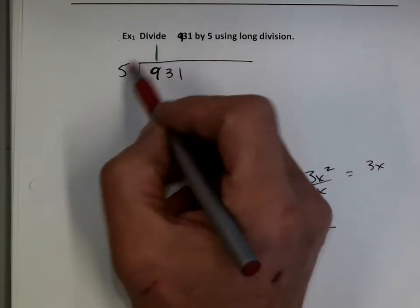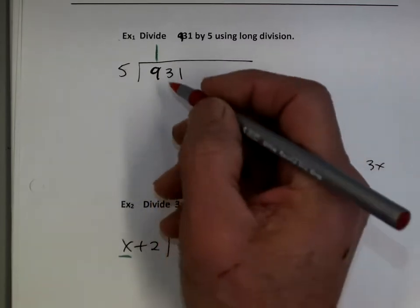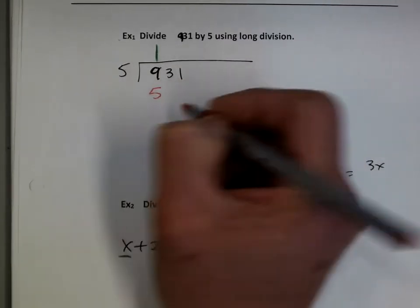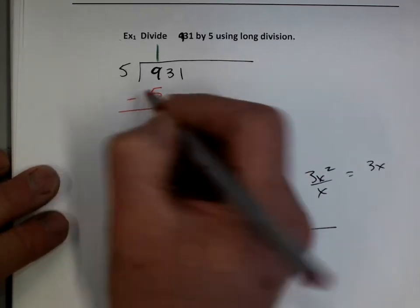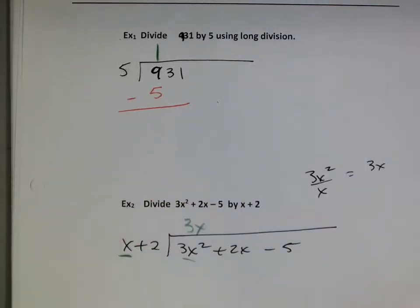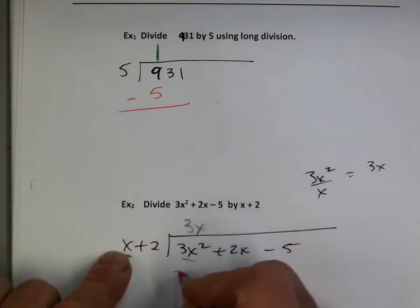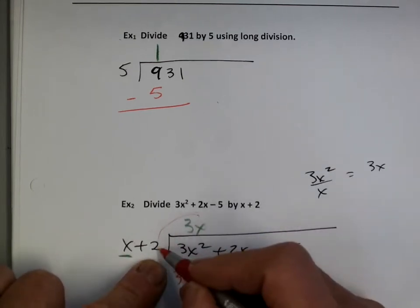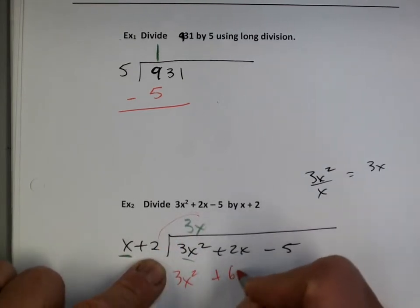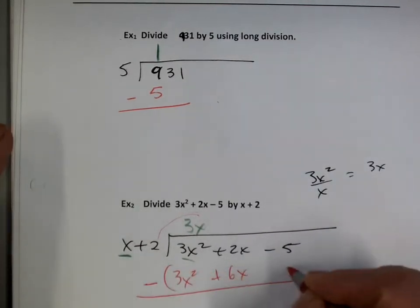Technically you go 1 times 5. 1 times 5 is 5. And then you subtract. So do the same thing here — we're going to take 3x times x, which makes 3x squared, and 3x times 2 makes a positive 6x. And then we subtract.